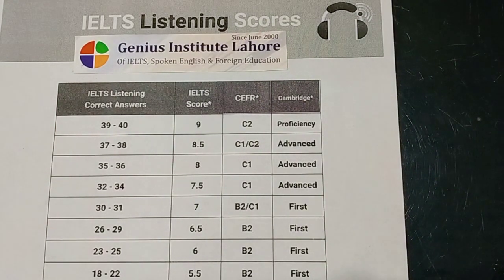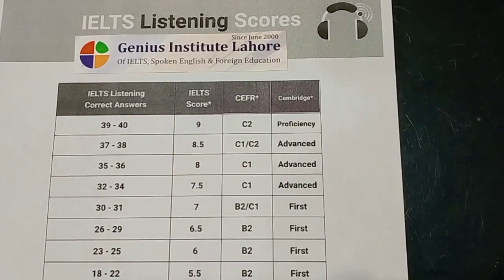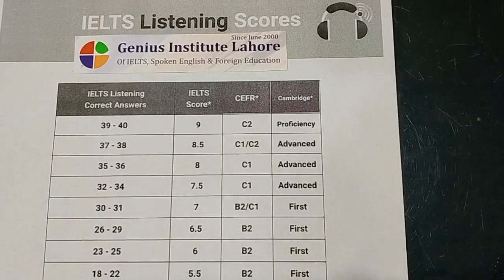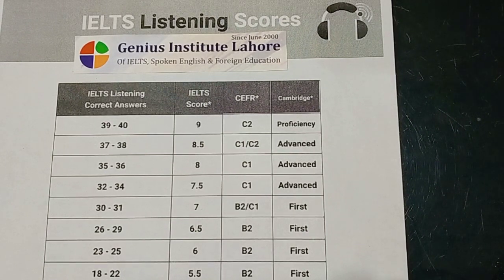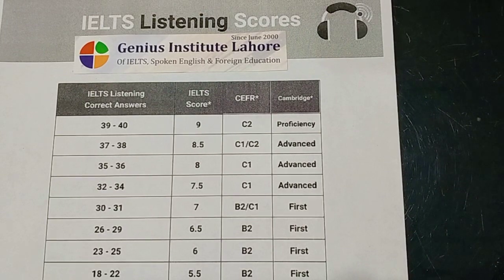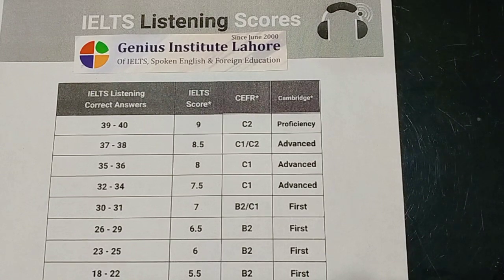For example, if your correct answers are 39 to 40, you will be given a band score of 9. In case of 37 to 38 correct answers, 8.5 band scores will be awarded. For 35 to 36 correct answers, you get 8. For 32 to 34, you get 7.5. For 30 to 31, you get 7 band scores. For 26 to 29, you get 6.5. And for 23 to 25, you get 6 band scores.